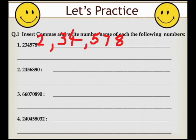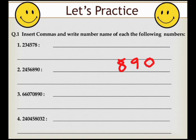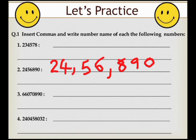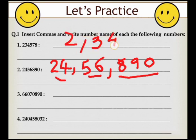Now we do the same for the second number. Write the last three digits first, insert a comma, then two digits, insert a comma again, then two digits. The number name is read as 24,56,890. For the first number, the answer is 2,34,578.